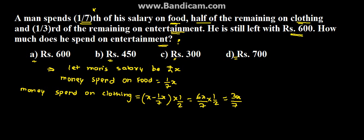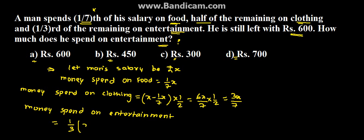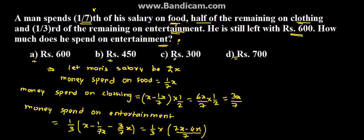Money spent on entertainment is equal to 1/3 into X minus 1/7 X minus 3/7 X, which equals 1/3 into 7X minus 4X upon 7, which equals 1/7 X. So 1/7 X is the money spent on entertainment.